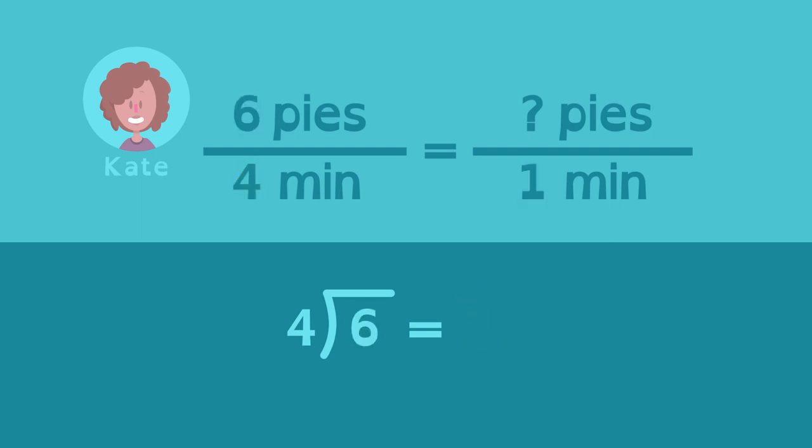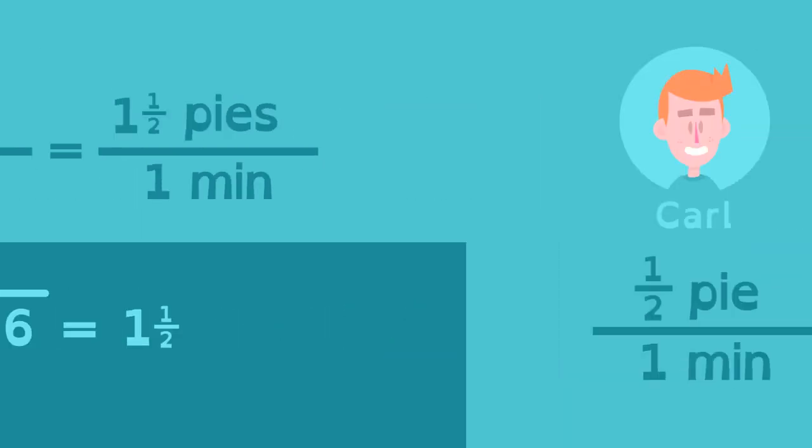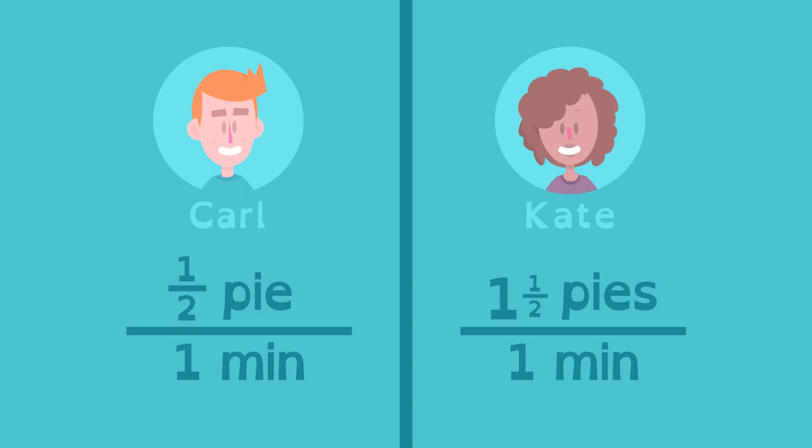The unit rate for Kate is one and a half pies per minute. Wow, Kate can really put away the pies!